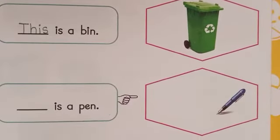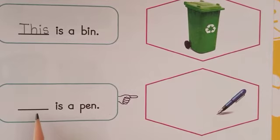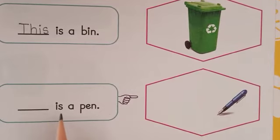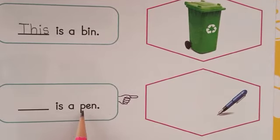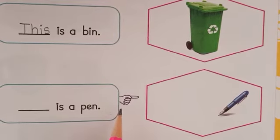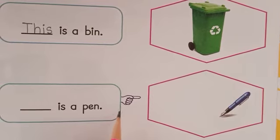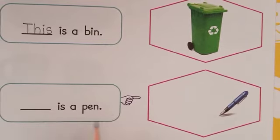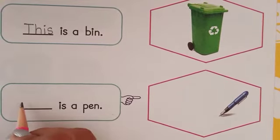Next one: dash is a PEN. Pointer is there. That means this pen is far. So what will we write? That.